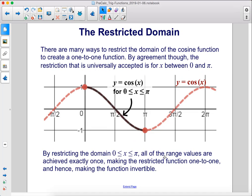There are many ways to restrict the domain of the cosine function to create a 1 to 1 function. By agreement though, the restriction that is universally accepted is for x between 0 and π. By restricting the domain to x between 0 and π, all of the range values are achieved exactly once, making the restricted function 1 to 1, and hence making the function invertible.